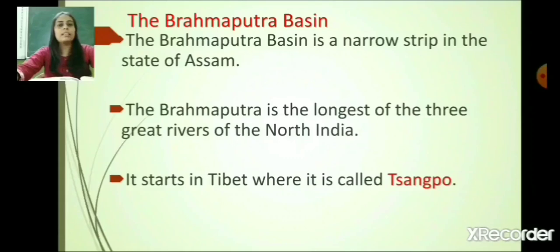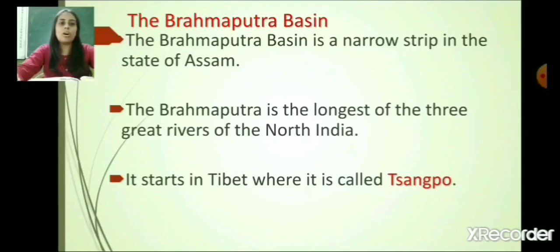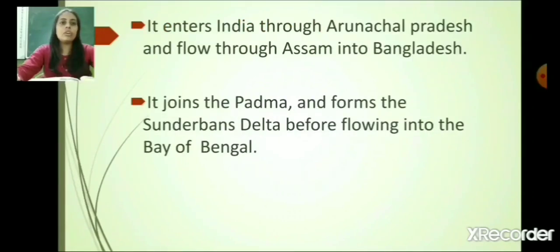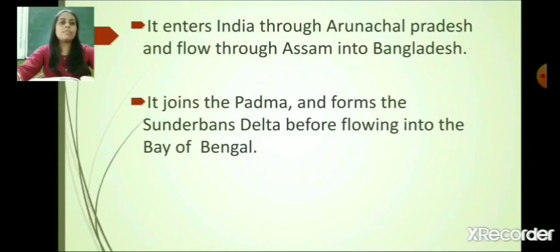Now comes the Brahmaputra Basin. The Brahmaputra Basin is a narrow strip in the state of Assam. The Brahmaputra is the longest of the three great rivers of North India. It starts in Tibet where it is called Tsangpo, enters India through Arunachal Pradesh, and flows through Assam into Bangladesh. It joins the Padma and forms the Sundarbans delta before entering the Bay of Bengal.